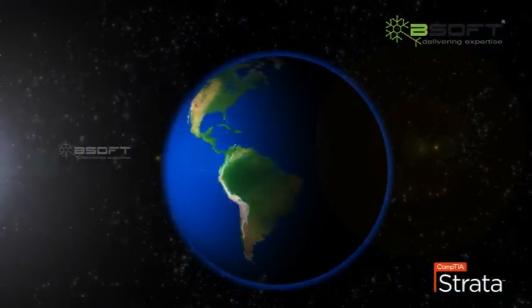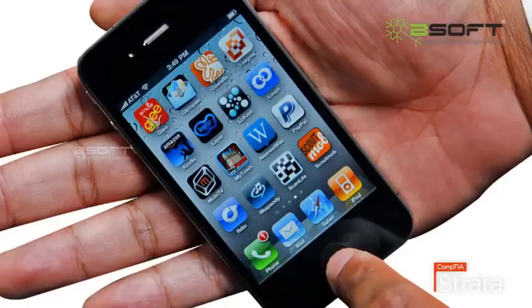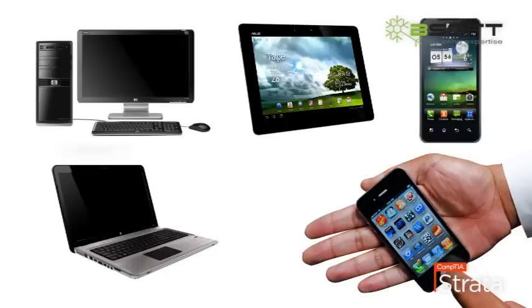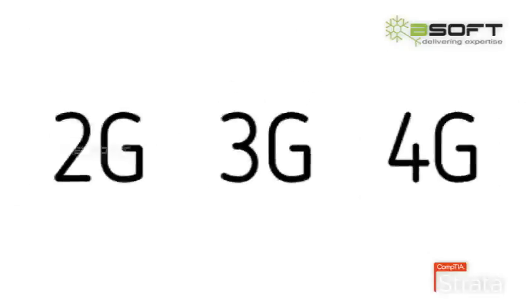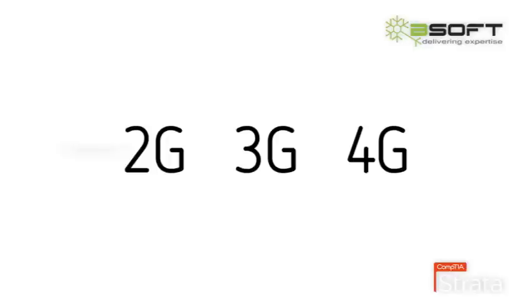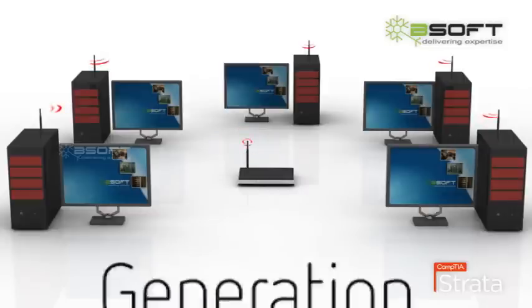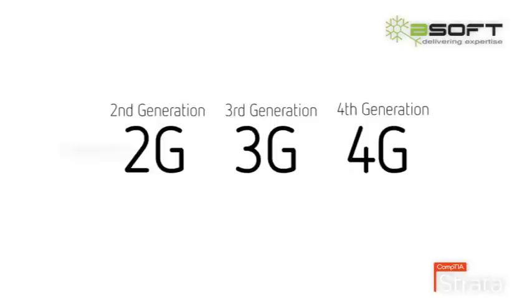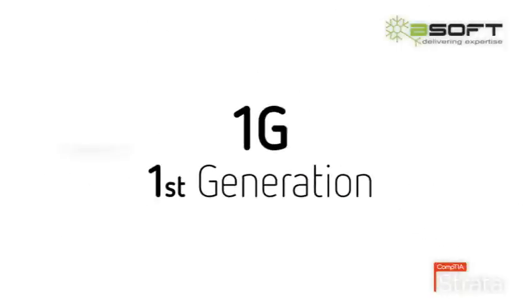A Wireless WAN (WWAN) is a network spread over a very large area, connecting many cities together. Mobile phones use wireless WAN to make communication possible. We depend on a variety of technologies to provide internet connectivity to mobile phones, tablets, and similar wireless devices. The technology used in wireless WANs is subdivided into many generations: second generation (2G), third generation (3G), and fourth generation (4G).